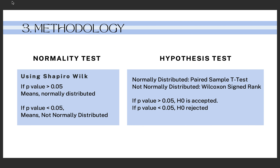This research uses a normality test to establish the appropriate statistical techniques and to assess whether the data has a normal distribution. The Shapiro-Wilk test will be used with a significance level of 5%, so if the p-value is greater than 5%, the data is normally distributed, and vice versa. After conducting the normality test, a hypothesis test will be conducted. If the data is normally distributed, parametric testing will be used, which is the paired sample t-test. If the data is not normally distributed, nonparametric testing will be used, which is the Wilcoxon signed-rank test.